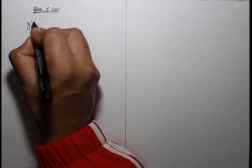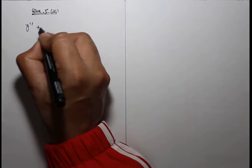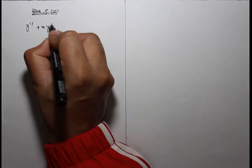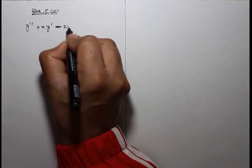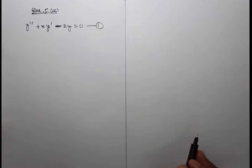Question 5, Part A. Find a power series solution of the following differential equation in powers of x. The differential equation is y'' + xy' - 2y = 0.